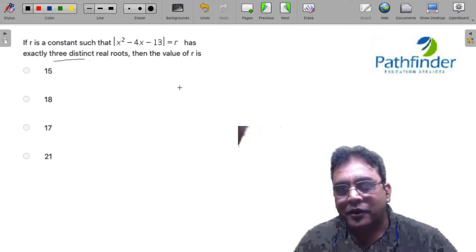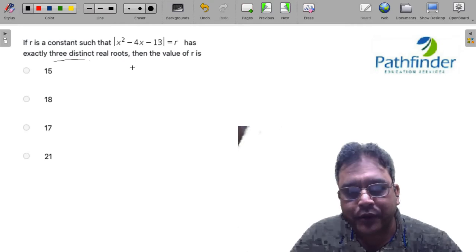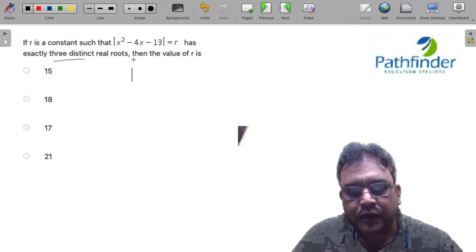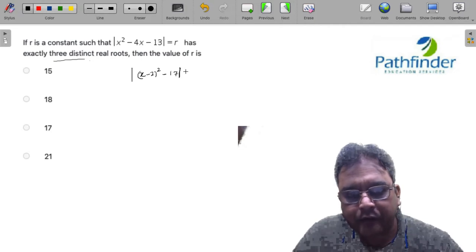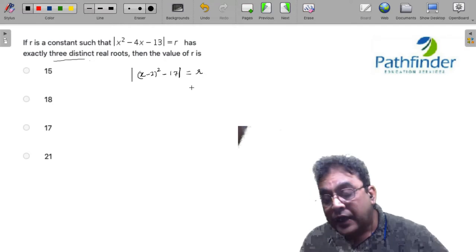Now to solve this question, the first thing I'm going to do is rewrite this as |(x - 2)² - 17| = r. The reason I am rewriting this as (x - 2)² is that the minimum value of any perfect square has to be 0.